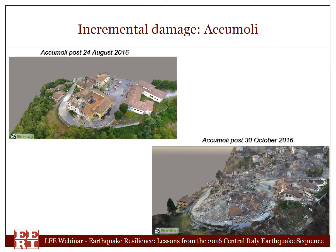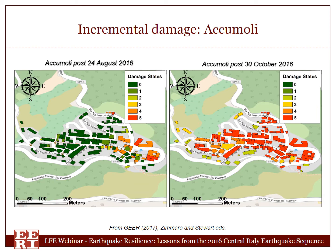These are two screenshots from 3D models for Accumuli — one from after the 24 August 2016 event, and one from after the 30 October event. Accumuli was a big example of incremental damage as a result of the whole sequence. This detailed structure-by-structure analysis shows that higher damage states related to collapse of buildings are more evident after 30 October, and there was a very important incremental damage accumulation as a result of the whole sequence in Accumuli.